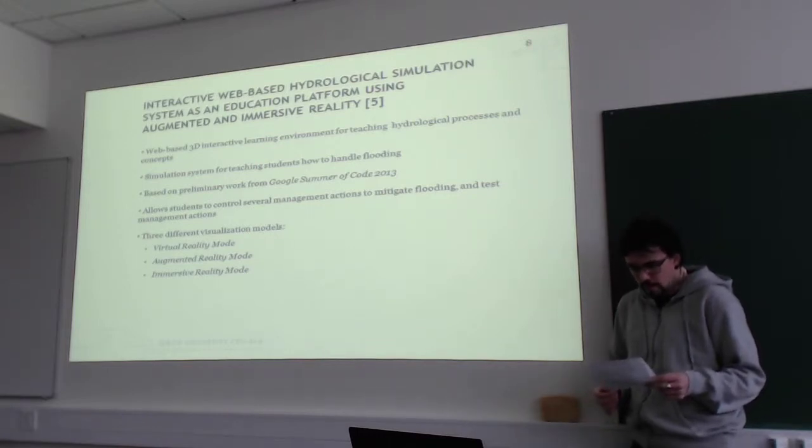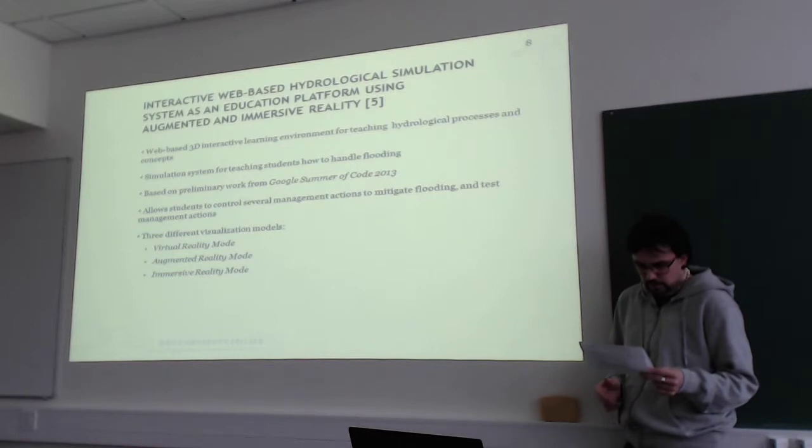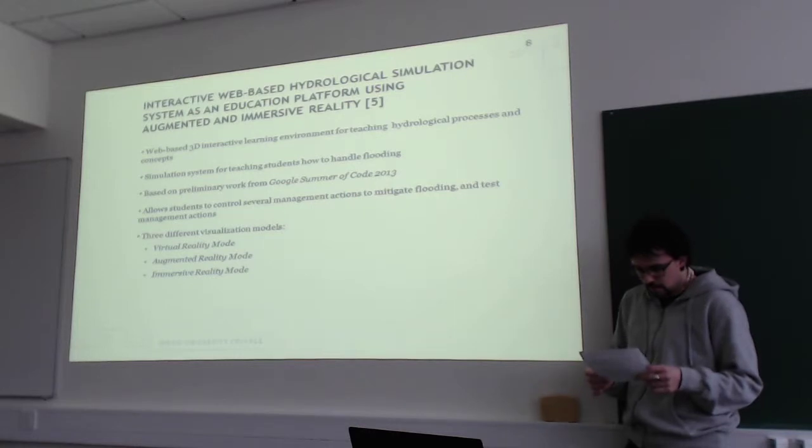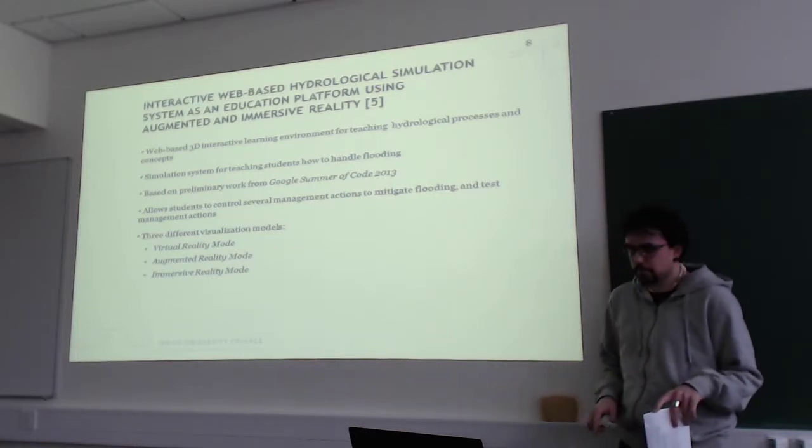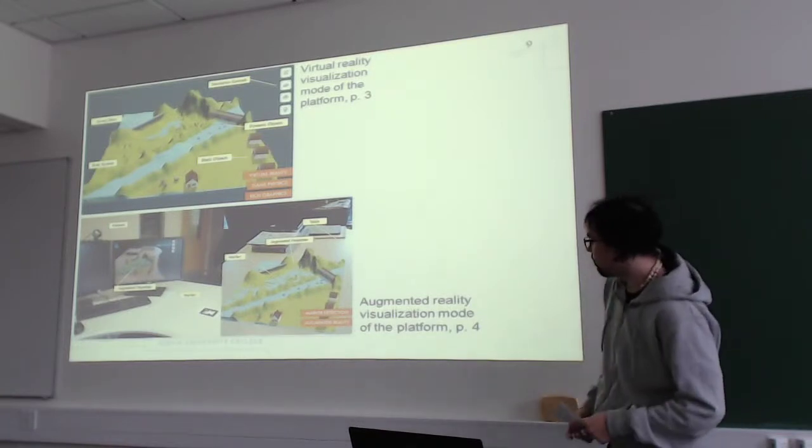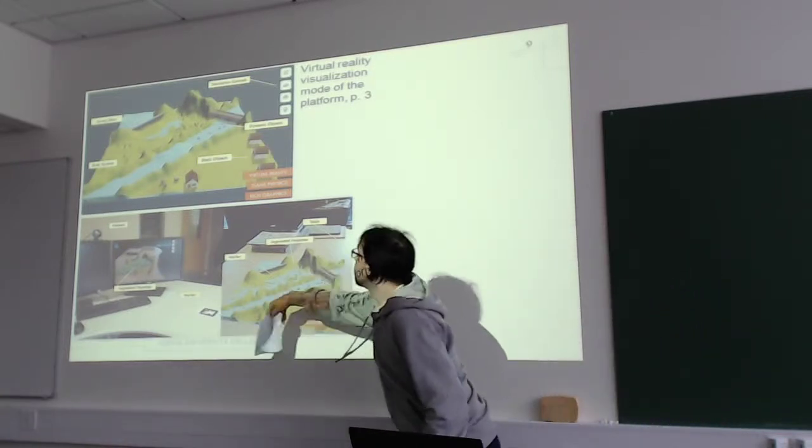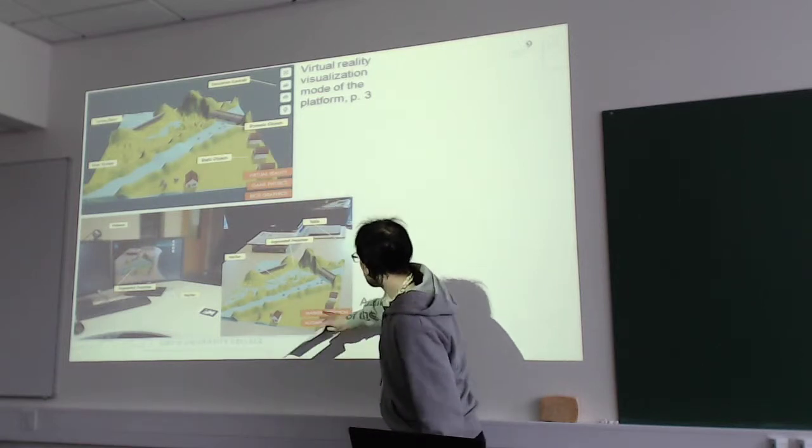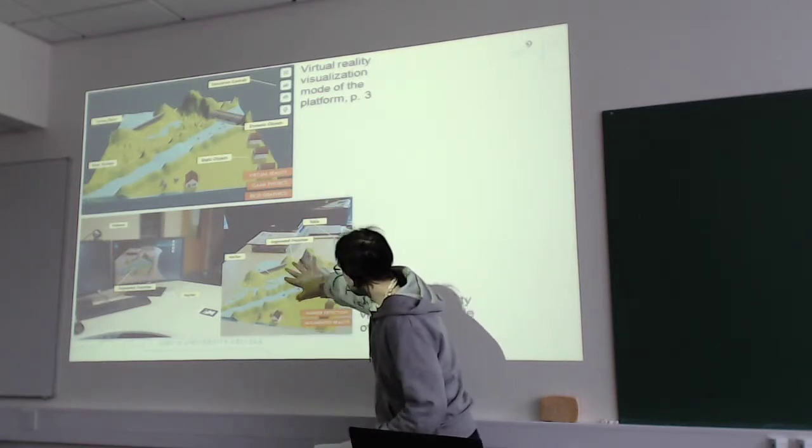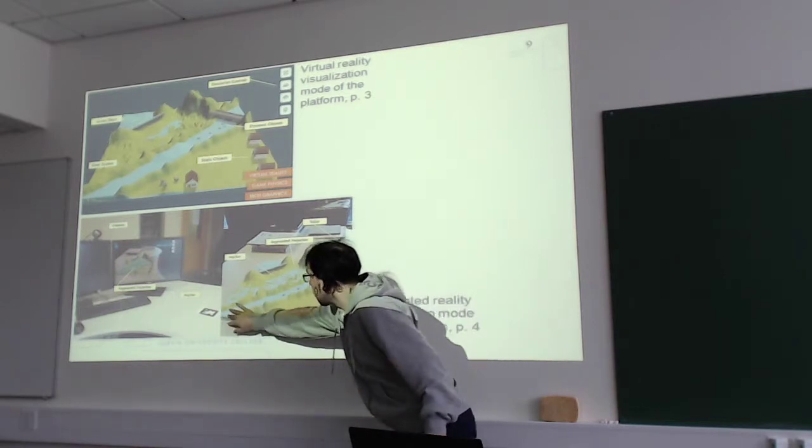The augmented reality mode is based on using a camera where you locate the trackers on a physical desktop and you use the overlay on a marker, as you can see here. So here is like how it looks virtually and this is what it looks like when you project it on the marker.